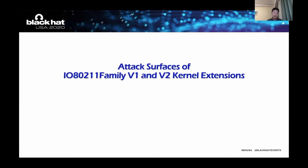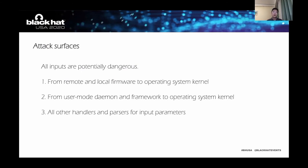In the next section, we will focus on attack surface and security assessment. We should consider all inputs as potentially dangerous, or we can call it zero trust. For the kernel, the attack surface can be divided into at least two categories: from remote and local firmware to the operating system kernel, and from daemon and framework to the operating system kernel. The third category belongs to some exceptions, so I listed it as all other handlers and parsers.